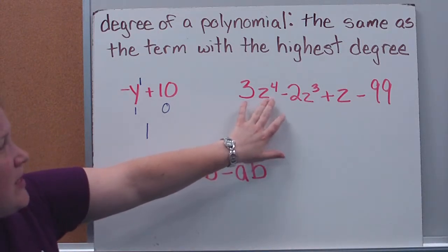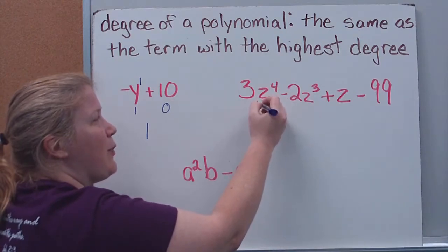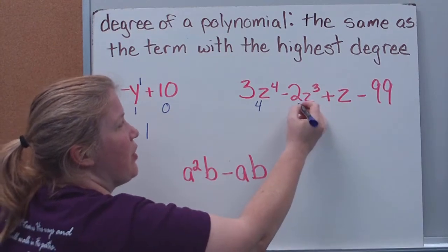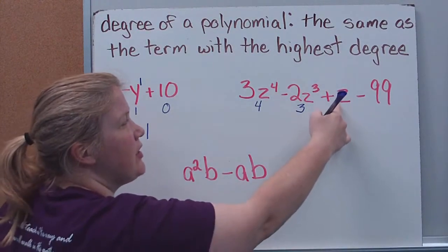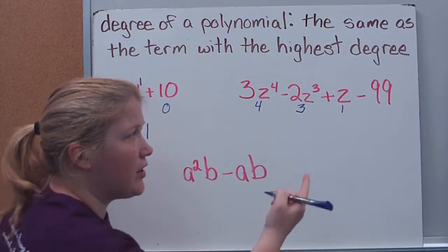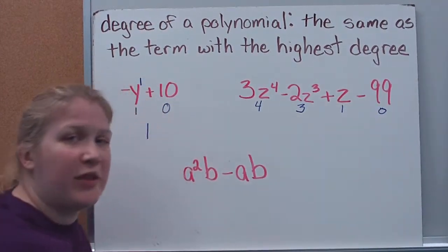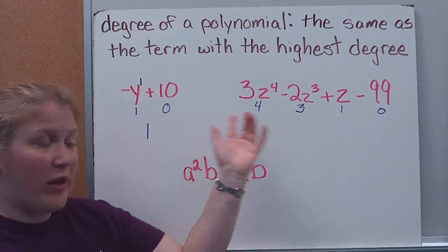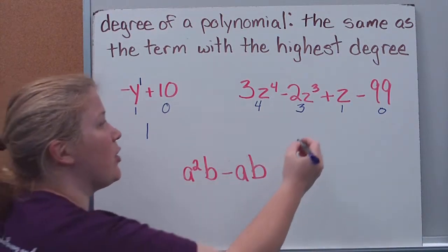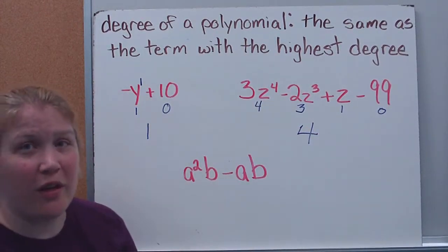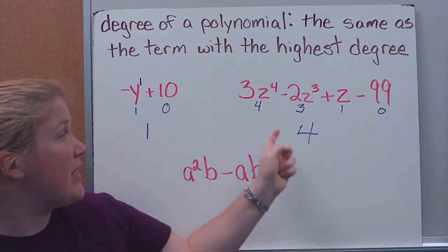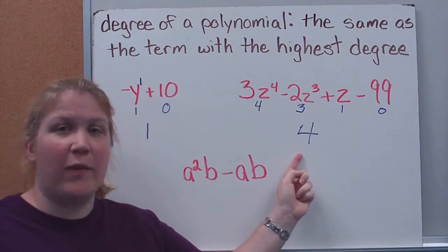Over here I have z to the 4th — that term has a degree of 4. z to the 3rd has a degree of 3. z has an implied 1, so it has a degree of 1. This term has no variable, so it has a degree of 0. The degree of the polynomial? We're looking for the highest term — the highest is 4, so the degree of the polynomial is 4. Don't try to add them together; it's just the highest degree that is the degree of the polynomial.